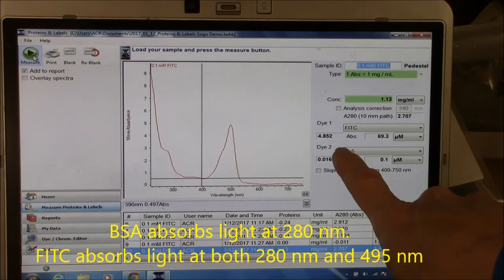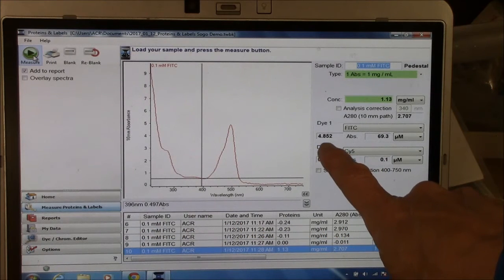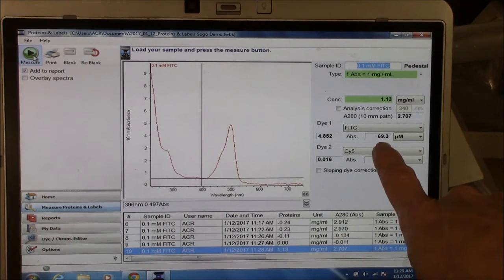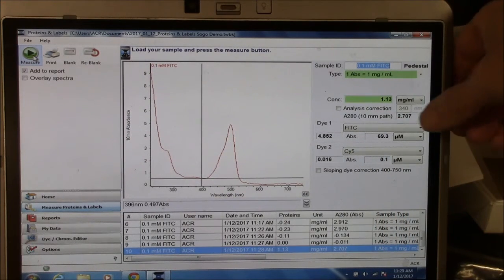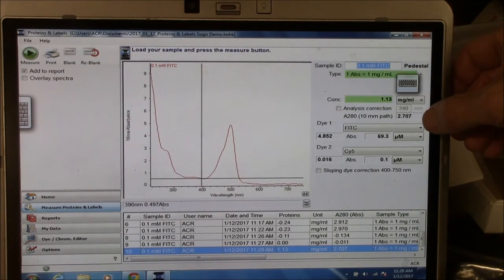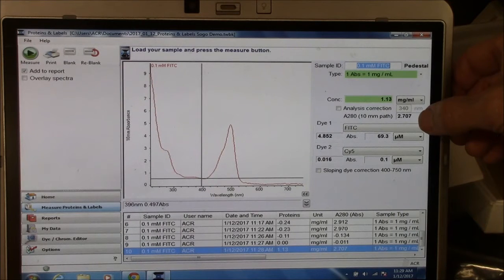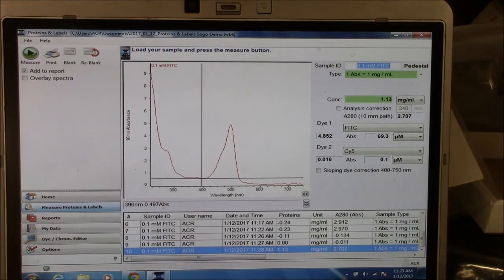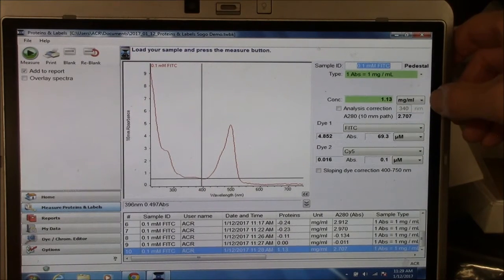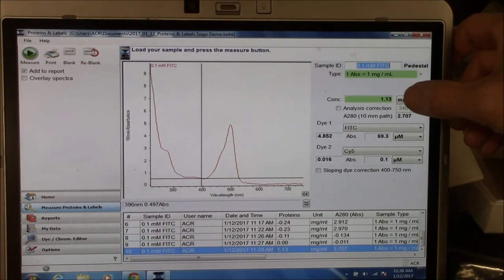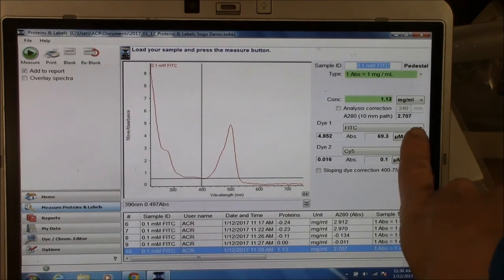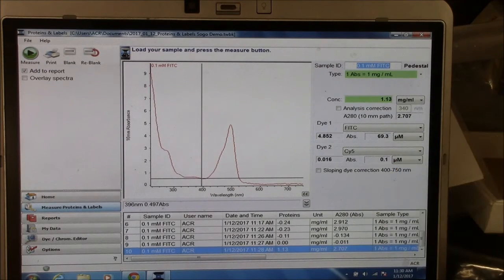It is telling me here that the absorbance at 495 nanometers is 4.85, which corresponds to a concentration of about 70 micromolar fluorescein. It's telling me here that the absorbance at 280 is 2.71. Some of this absorbance is due to the fluorescein, the FITC, and some of this absorbance is due to the protein itself. The computer is suggesting that the concentration of the protein is 1.1 mg per mil. Now, that is not the truth, but it's close to the truth. It's really saying that the absorbance at 280 nanometers is 1.1 after we subtract out the contribution of FITC to this absorbance at 280 nanometers. I will show you that on paper.